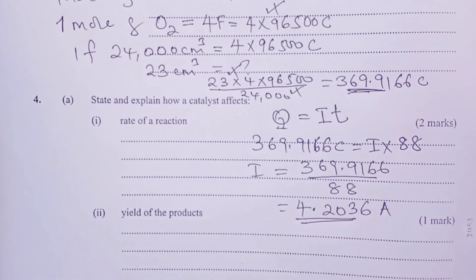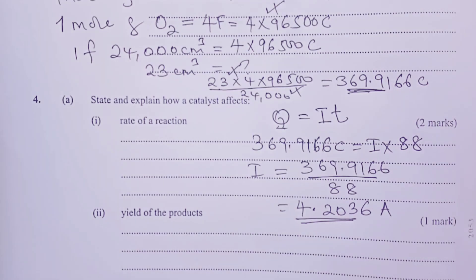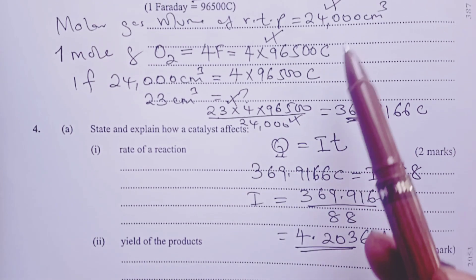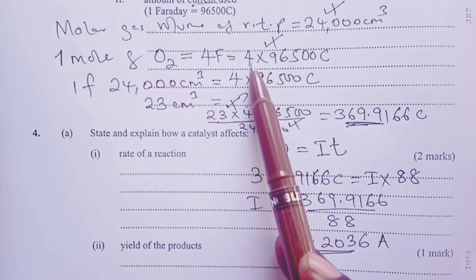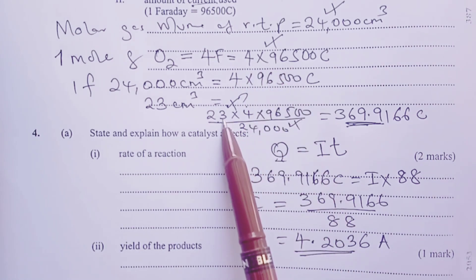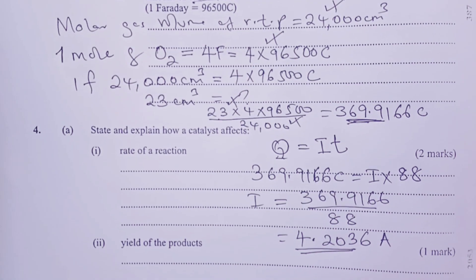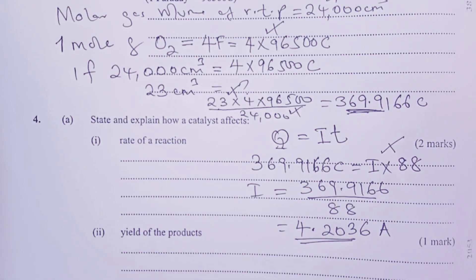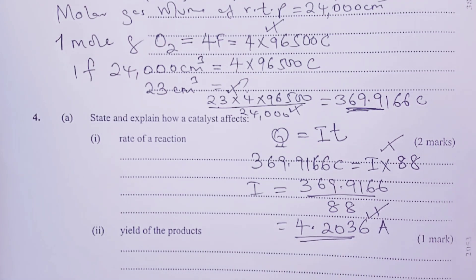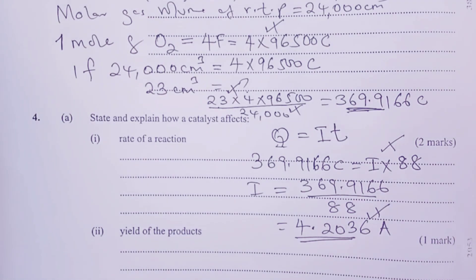The space could not accommodate all our working, so we have infringed on the space set for answering other questions. We are sorry for that. Now, we have so far awarded two marks, half for getting the molar gas volume, half for multiplication by 4, half for multiplication by 23, half for division by 24,000. So, one more mark to go. We shall award half for multiplication by 88. And, finally, the answer, another half mark. With that, we've come to the end of question number three, as tested in the year 2022, chemistry paper 2. The question tested electrochemistry as a topic. Thank you for being with us.